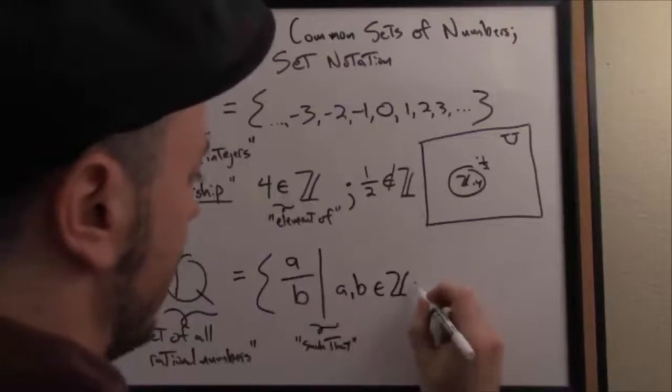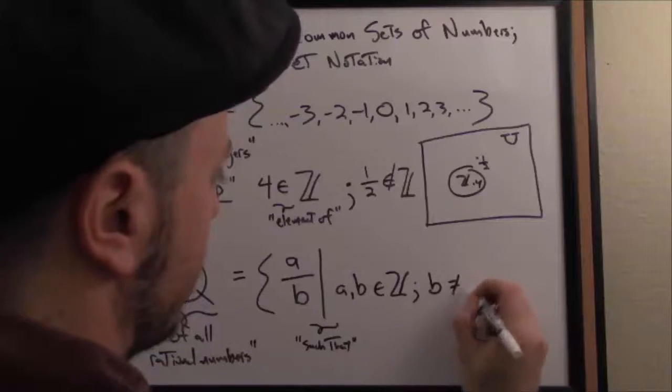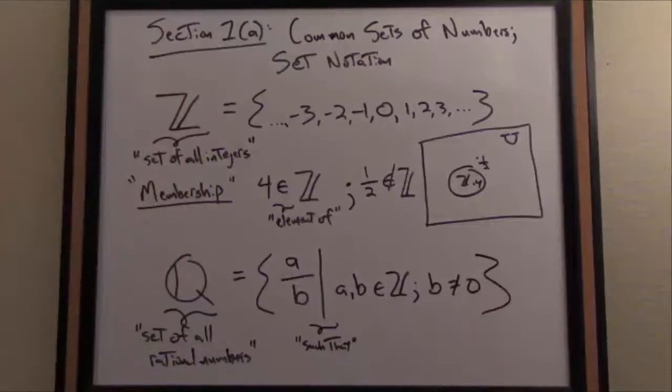To be totally thorough, we can't divide by zero, can't have zero in the denominator, so we also have to specify that b cannot be zero. There you have it.